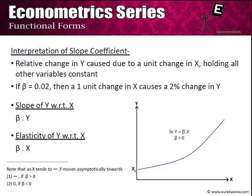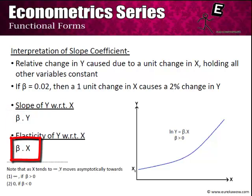Neither the slope nor the elasticity of y with respect to x is constant in the log-lin model. The slope of y with respect to x is given by β·y, making it an increasing function of y, whereas the elasticity of y with respect to x is given by β·x, making it an increasing function of x.